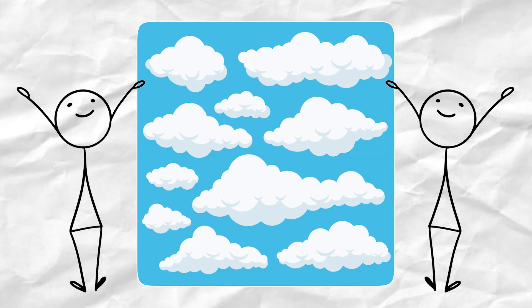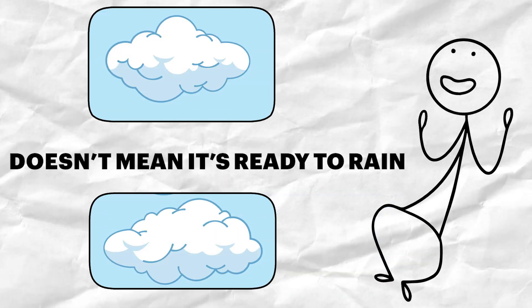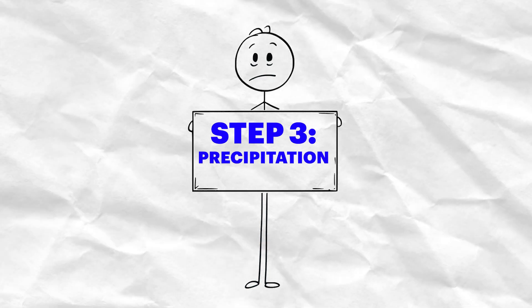As more and more droplets gather, clouds begin to grow. But just because you see a cloud doesn't mean it's ready to rain. Not yet. Step 3. Precipitation.